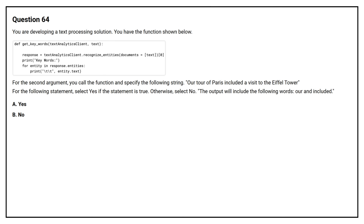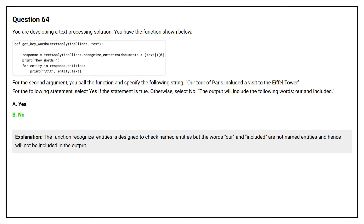Question number 64. You are developing a text processing solution. You have the function shown below. For the second argument, you call the function and specify the following string: 'Our tour of Paris included a visit to the Eiffel Tower.' Select yes if the statement is true, otherwise select no. The output will include the following words: 'Our' and 'included.' Option A: Yes. Option B: No. The correct answer is Option B: No. The function recognize_entities is designed to identify named entities, but the words 'Our' and 'included' are not named entities and hence will not be included in the output.